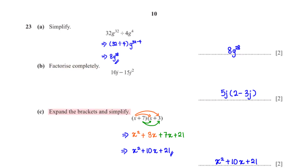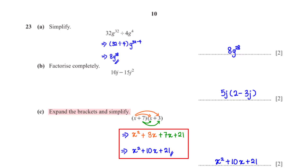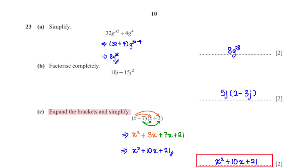Expand the brackets and simplify: (x plus 7)(x plus 3). First, x multiplies each of the terms in the other brackets: x times x is x squared and x times 3 is 3x. Now 7 also multiplies each of the terms: 7 times x is 7x and 7 times 3 is 21. 3x plus 7x is 10x. So our final answer is x squared plus 10x plus 21.